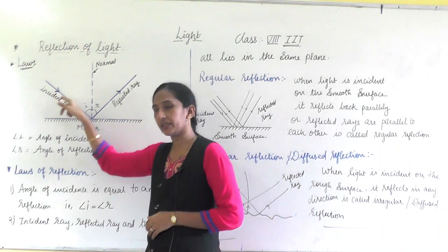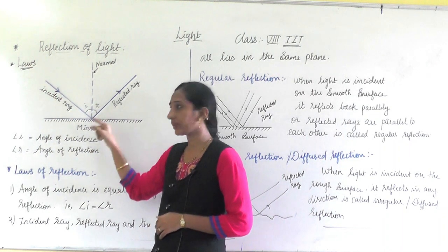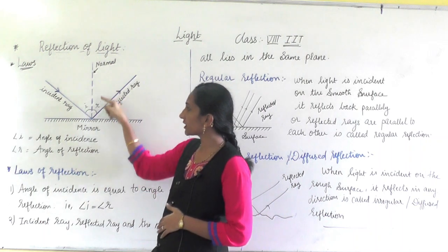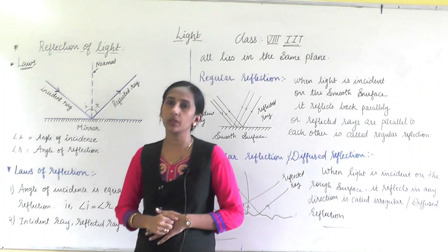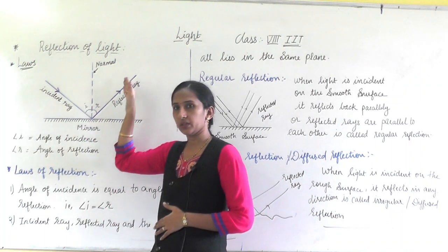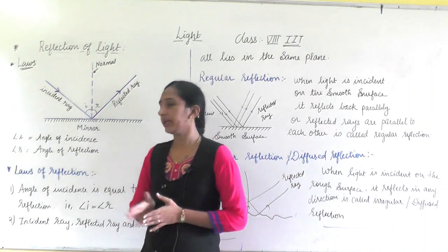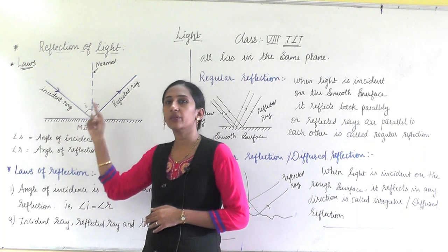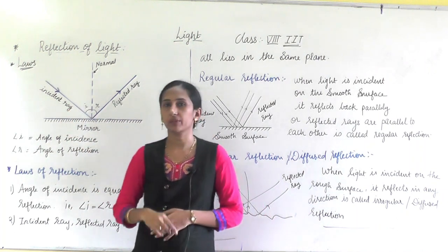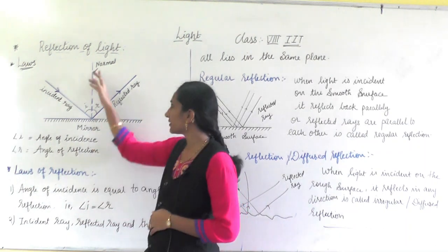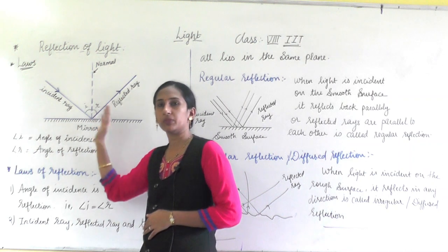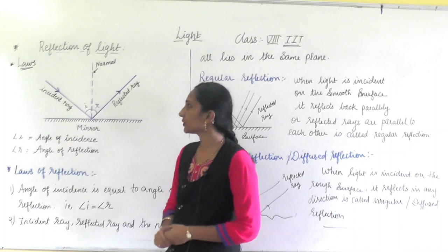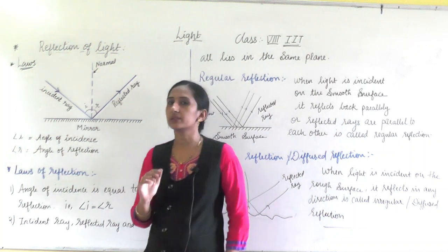Once more: this is the mirror, the incident ray falls on the mirror, and after reflection, the ray that bounces back is called the reflected ray. The line drawn perpendicular to the surface at the point of incidence is called the normal. The normal divides the space between the incident ray and the reflected ray.